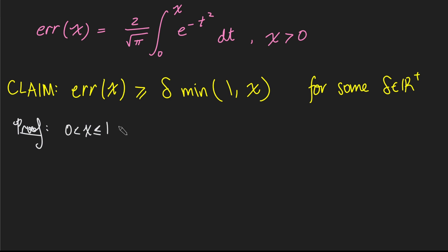And what happens here? Well, then we can observe that e to the negative t squared is a decreasing function. As t gets bigger, e to the negative t squared gets smaller, and so therefore it's true to say that if x is between 0 and 1, t will certainly be between 0 and x, and so therefore between 0 and 1.